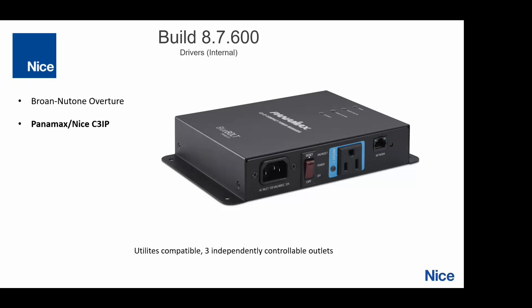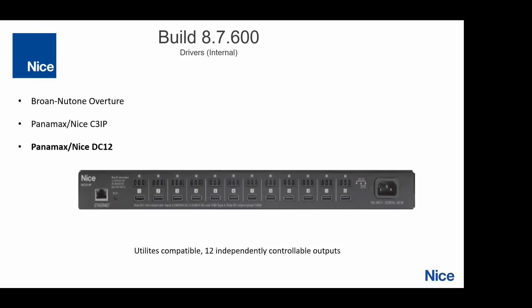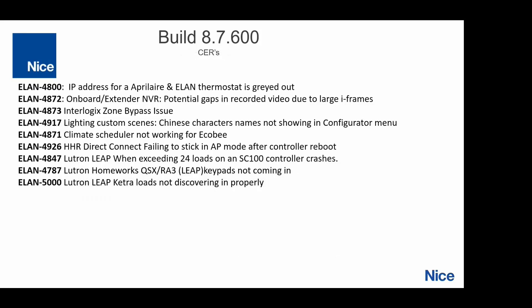The C3IP is also in the 8.7600 branch under utilities. The DC12 is also going to be in the 8.7600 branch. It's important to note that while the firmware and drivers are ready in this release, the DC12 will not be shipping until Q1. You'll be able to see pre-orders probably towards the end of the year, but it won't ship out until Q1.